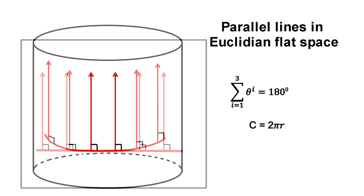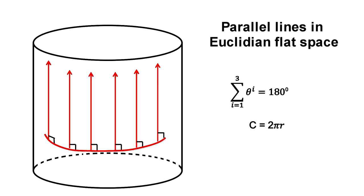We can bend this two-dimensional surface into a third dimension and give it the look of curved space, but this curvature is extrinsic by nature. The intrinsic curvature is still flat.